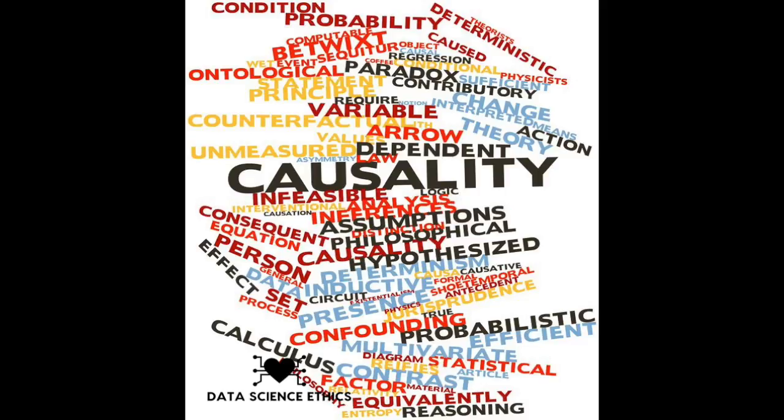Countries with more wealth tend to have better living conditions, sanitation, and access to medical care. They also tend to have the money for more televisions. That's not to say that there aren't good uses for proxy variables.